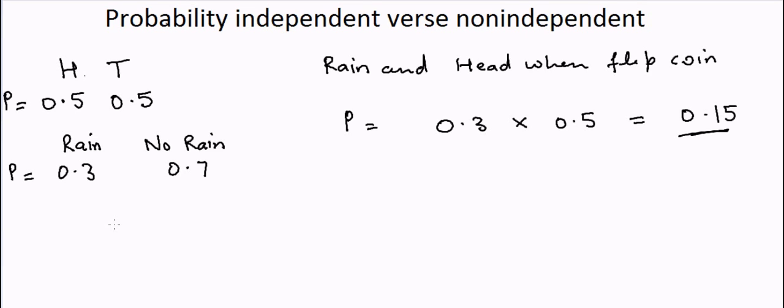Now if we talk about non-independent events, in that case the probability of one event will also affect the likelihood of another event. Let's start with the example.